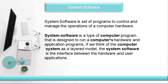We need to open the application and respond to the hardware. This is a step-by-step process. We need to open the system software. System software is a type of computer program that is designed to run the computer hardware. The system is a layered model with application programs. System software is designed to run the computer hardware and application programs.